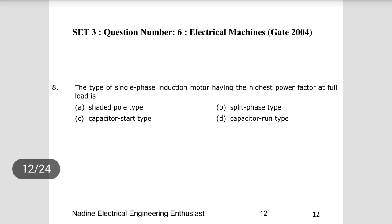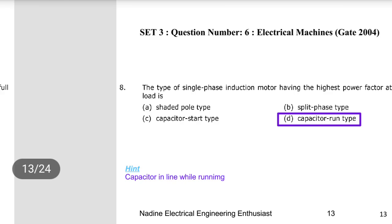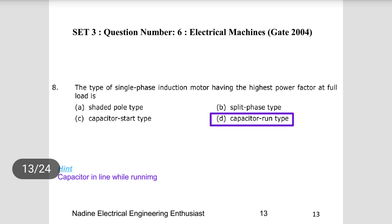Sixth question: which type of single-phase induction motor has the highest power factor at full load? In a capacitor-start motor, the capacitor is present only during starting. In a capacitor-run motor, the capacitor is always connected with the winding during running. Because the capacitor is always connected, the power factor of operation is higher. So the capacitor-run type motor has the highest power factor. That is the correct answer.